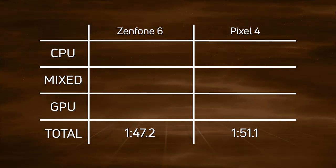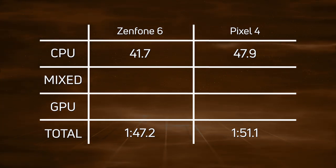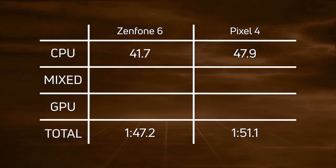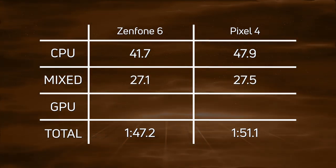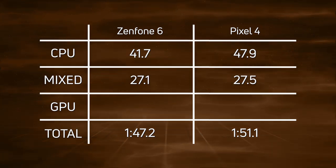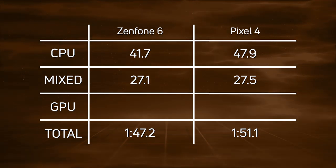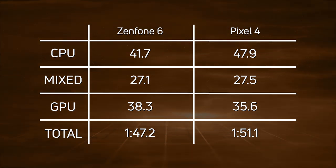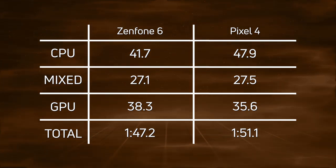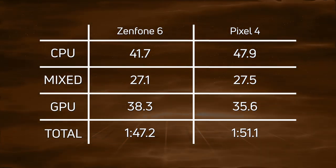The Asus Zenfone 6 won with 1 minute 47.2, and the Pixel 4 came in a few seconds later at 1 minute 51.1. Looking at the CPU times, the Zenfone 6 had a huge lead — 41.7 seconds compared to 47.9 seconds. In the mixed CPU/GPU section — the blur test, infinite scrolling, and smoke particle test — the Pixel 4 gained some ground: 27.1 versus 27.5, just 0.4 seconds difference. But in the GPU test it reversed: 38.3 for the Zenfone 6 versus 35.6 for the Pixel 4, so the Pixel 4 caught up in GPU but not quite enough overall.